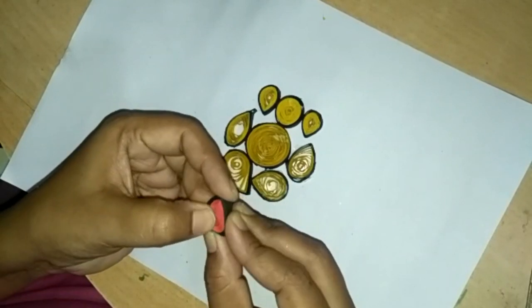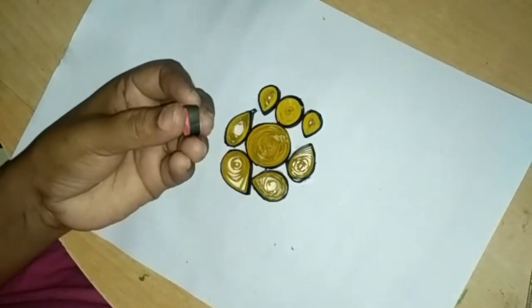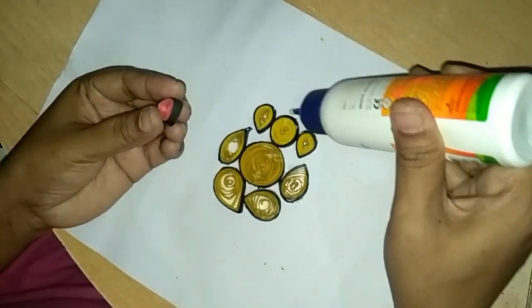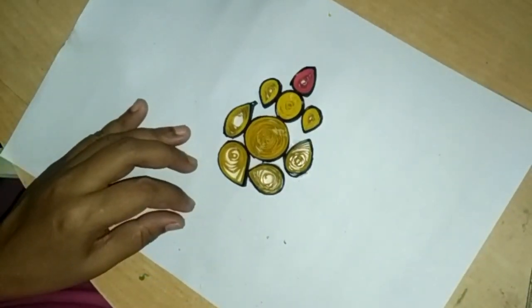Now press this petal shape from the below side and make a triangle shape and paste here like a crown.